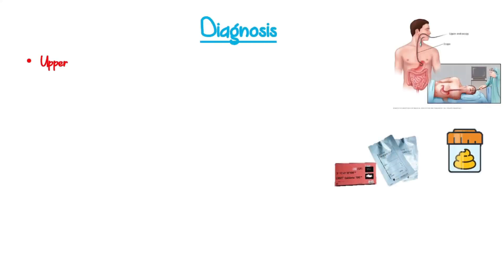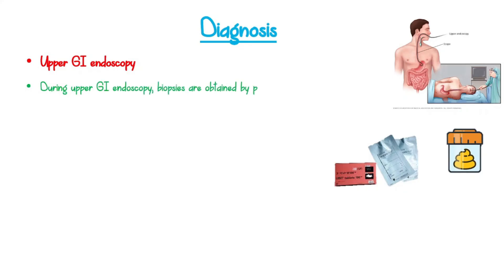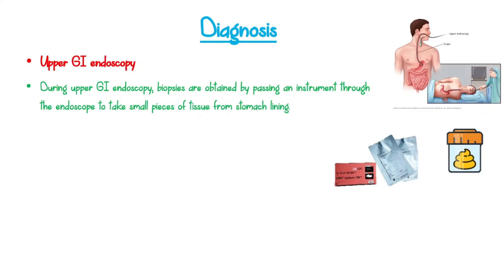Diagnosis. Upper GI endoscopy is a procedure which uses an endoscope — a flexible tube with a camera — to see the lining of the upper GI tract, including the esophagus, stomach, and duodenum. During upper GI endoscopy, biopsies are obtained by passing an instrument through the endoscope to take small pieces of tissue from the stomach lining.